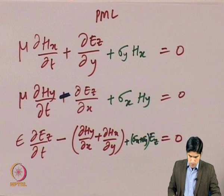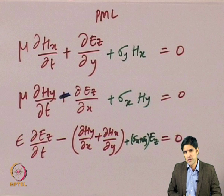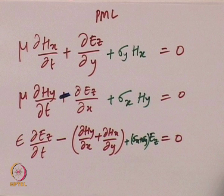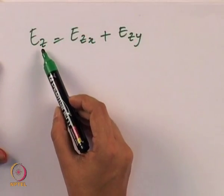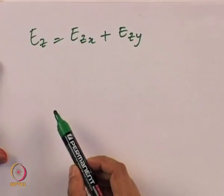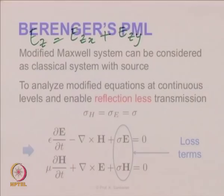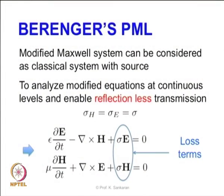To model these equations in a finite difference algorithm we need to modify them slightly. We split the value of Ez into Ezx and Ezy so we can formulate it in the finite difference method. We also make the magnetic and electric losses equal — we use a single σ as the loss term rather than separate magnetic and electric losses.